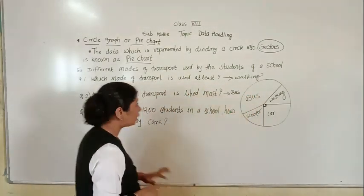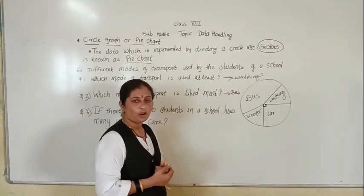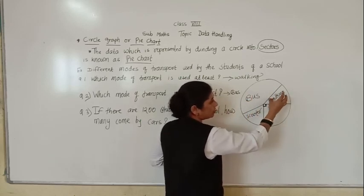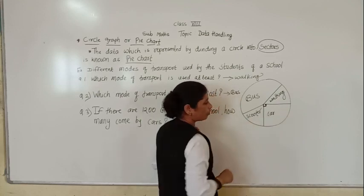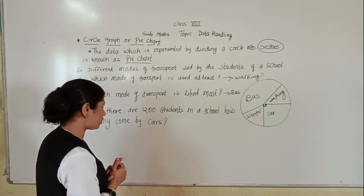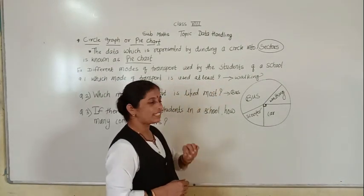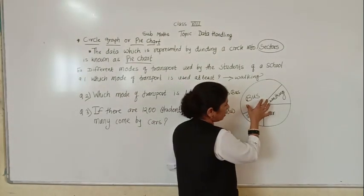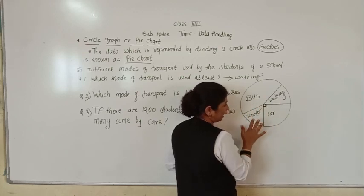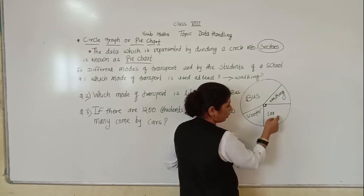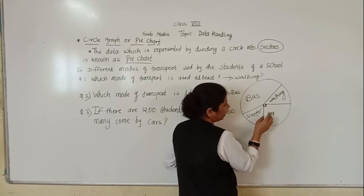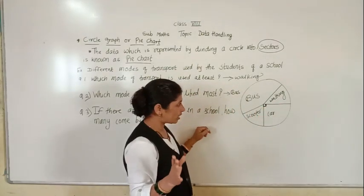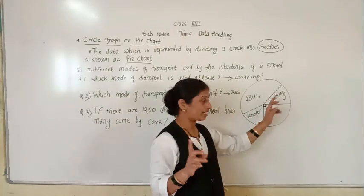This graph shows different modes of transport used by students of a school. Some students go by bus, some by walking, some by car, and some by scooter. Which mode of transport is used the least? The least means only a few students use that transport. Comparing the sector angles, walking has the smallest angle, so walking is used the least.